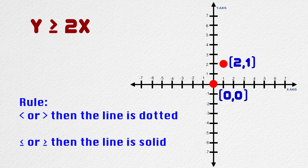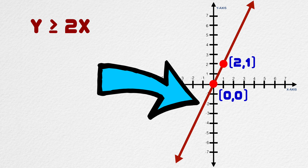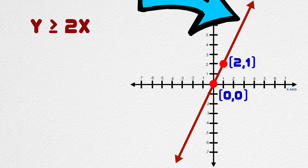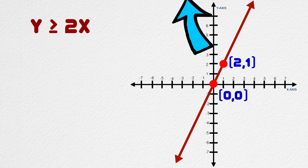Let's go ahead and draw the solid line. Our symbol is greater than or equal to, which means the value of y can either be greater than 2x or equal to 2x. So y can be any value either on this line or above this line. Let's shade all the possible values for y.